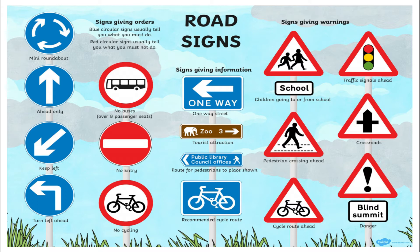The signs on the right hand side are triangular shapes, giving warnings. The first one at the top is a school sign — you have to slow down and be wary of children crossing the road. Next to it, there's a traffic signals ahead warning. The third is a pedestrian crossing sign, meaning people are crossing the street. The final one is a roundabout ahead warning. The difference between the triangular and rectangular cycle signs: the rectangular shape means the route is exclusively for cyclists, while the red triangle warns that cyclists are ahead on the street.